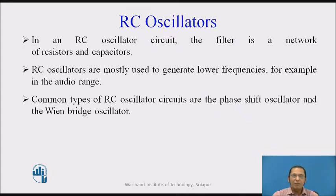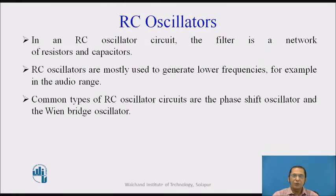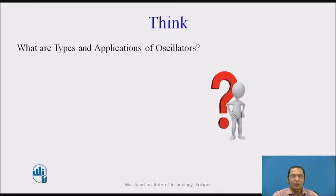One of the very popular types of oscillators based on components are RC oscillators. In an RC oscillator, the filter network is designed using resistors and capacitors. RC oscillators are simple to design and are mostly used to generate low frequencies in the audio range, between 16 Hz and 20 kHz. Common types of RC oscillator circuits are the phase shift oscillator and the Wien bridge oscillator.